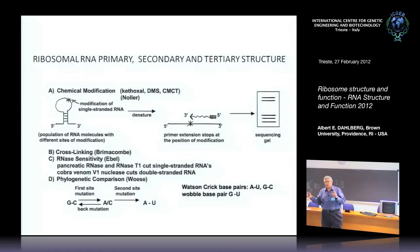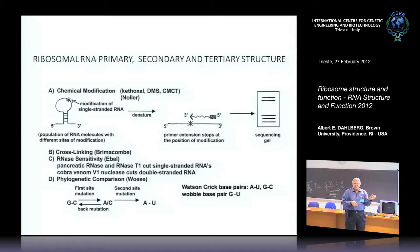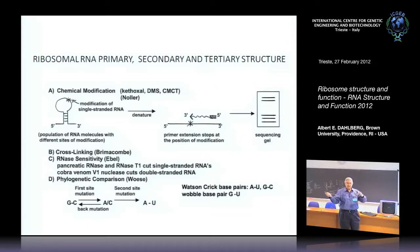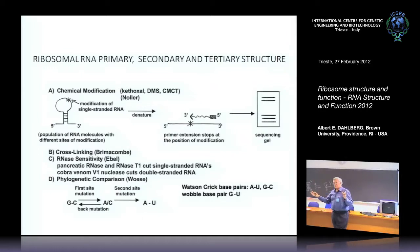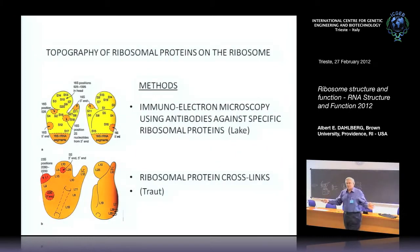Carl Woese put this all together. He looked at the data and saw regions that appeared base paired, then asked whether a GC interaction was really a GC when two strands came together. He looked at other sequences at that site in other organisms and saw it could be an AU instead of a GC—evidence supporting a true base-paired stem structure at that point. In the end, we had this picture accumulated from antibodies binding to ribosomal proteins and cross-linking data, confirming what we saw.